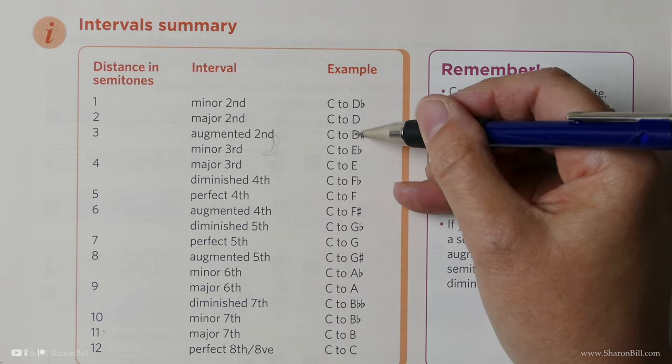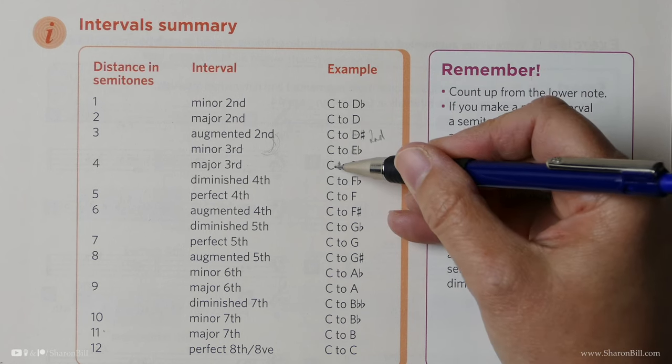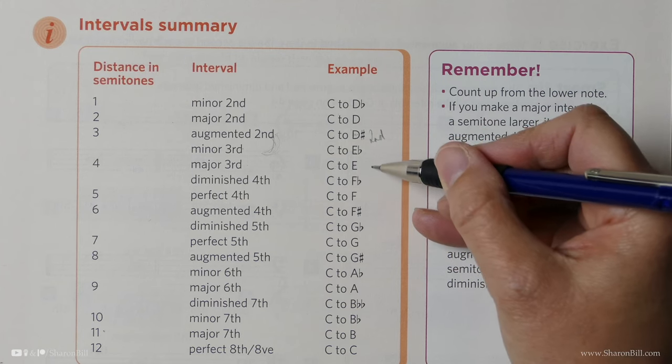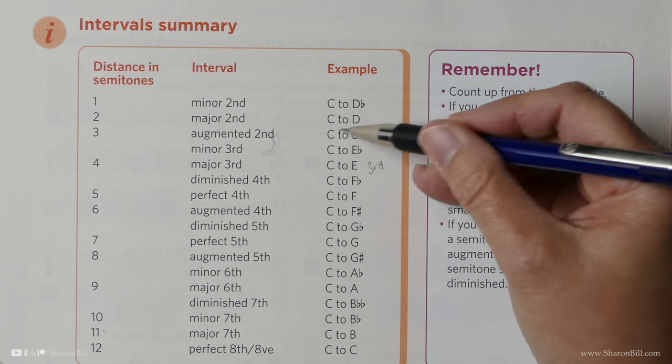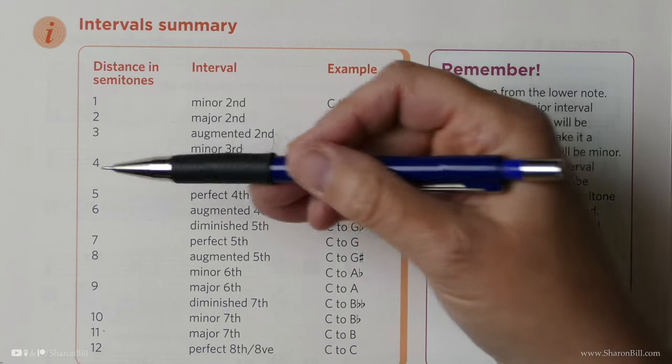Because remember, a C to a D of any sort is a second. A C to an E of any sort, C, D, E, 1, 2, 3, is a third. And yet, C to D sharp and C to E flat is the same number of semitones.